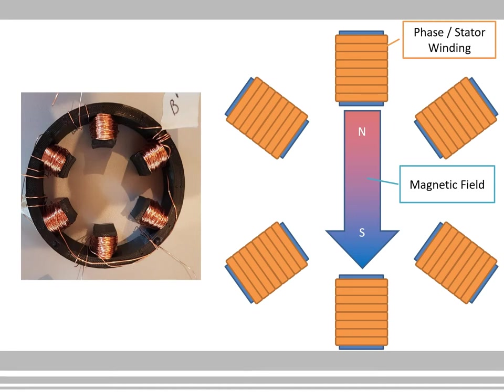If we translate that into a schematic diagram, on the right we can see our individual stator phase windings represented in orange. I've represented the magnetic field they create as an arrow pointing in the direction of north to south, which is the direction of the magnetic field.